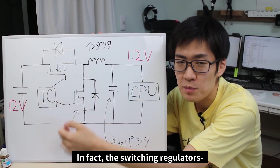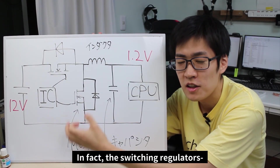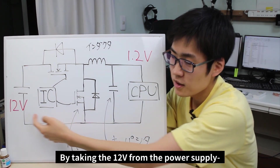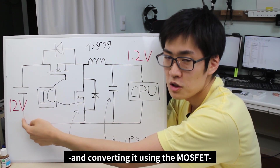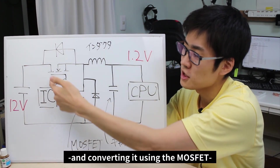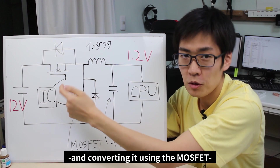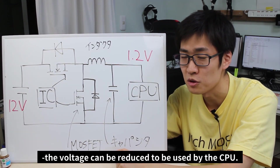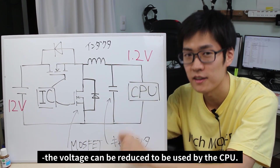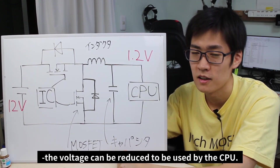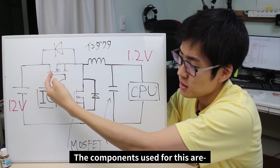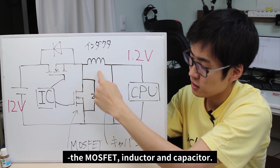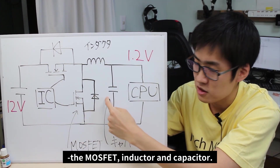If you look at this circuit diagram, you can see how the switching regulators interact with the CPU. By taking the power supply's 12 volts and converting it using the MOSFET, the voltage can be reduced to be used by the CPU. The components used for this are the MOSFET, inductor, and capacitor.